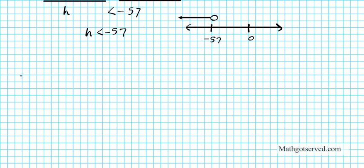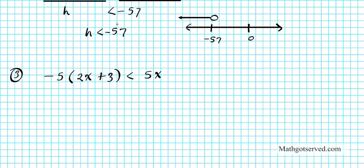Let's move on to example 3. We have to solve and graph the inequality negative 5 times the quantity 2x plus 3 is less than 5x. To do this, first we need to get rid of the parenthesis, so I'll distribute the negative 5 to each term inside. Negative 5 times 2x is negative 10x, and negative 5 times positive 3 is negative 15. So we have negative 10x minus 15 is less than 5x.